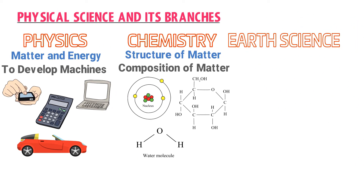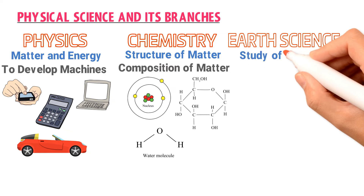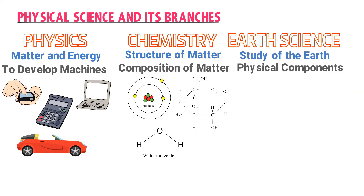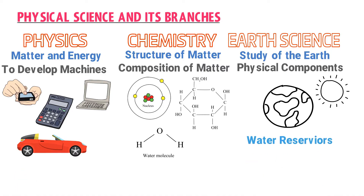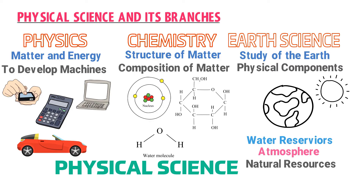The third important branch of physical science is earth science. In earth science, we study about the earth and its physical components. For example, earth science teaches us about mountains, water reservoirs, atmosphere, natural resources, and how they are tied together. Remember that physics, chemistry, and earth science are the three important branches of physical science.